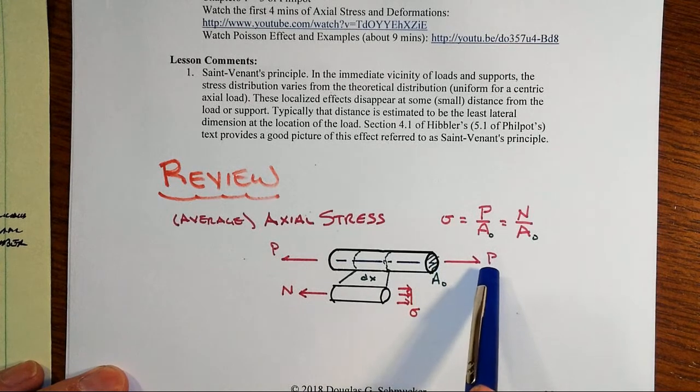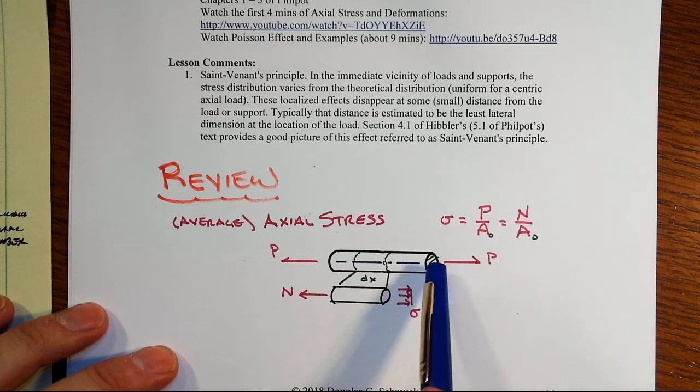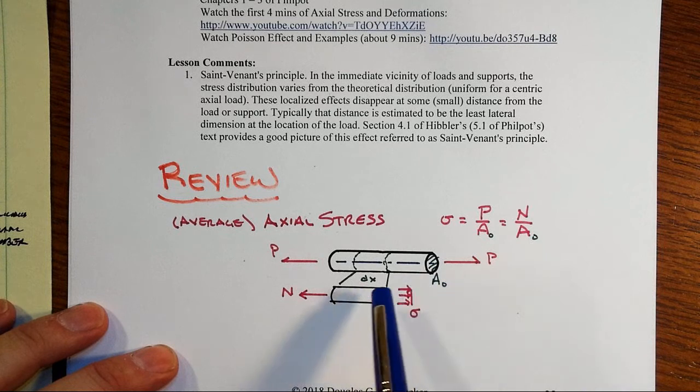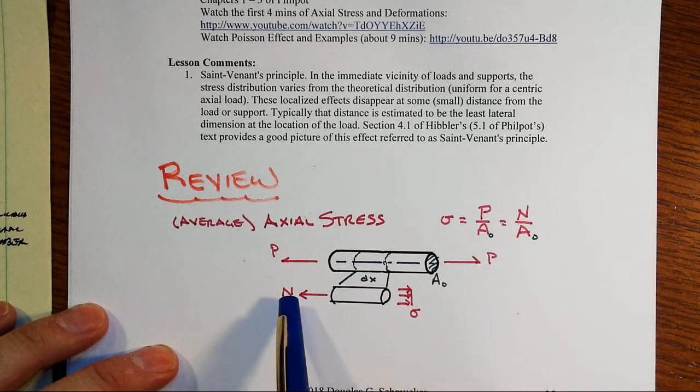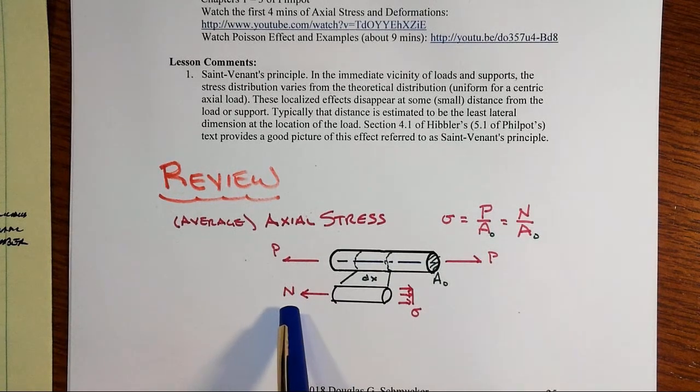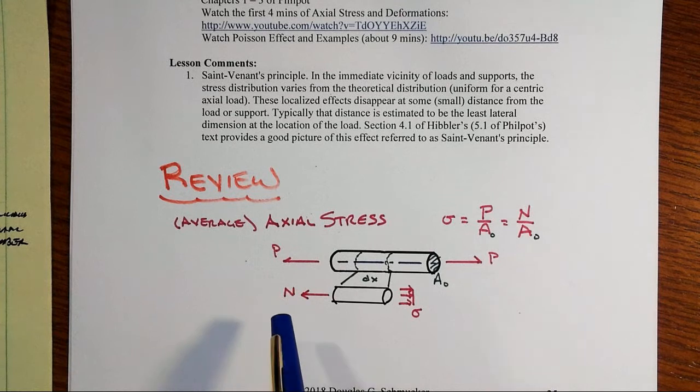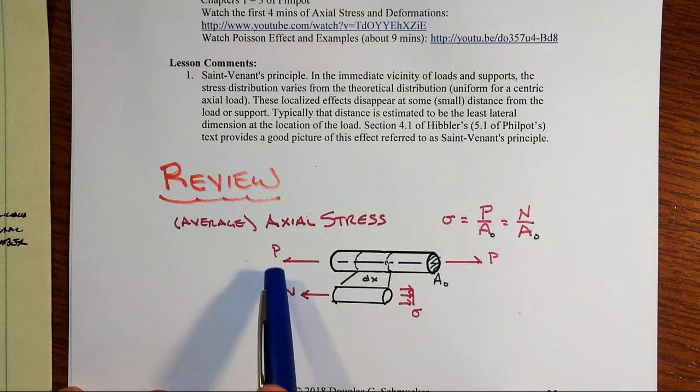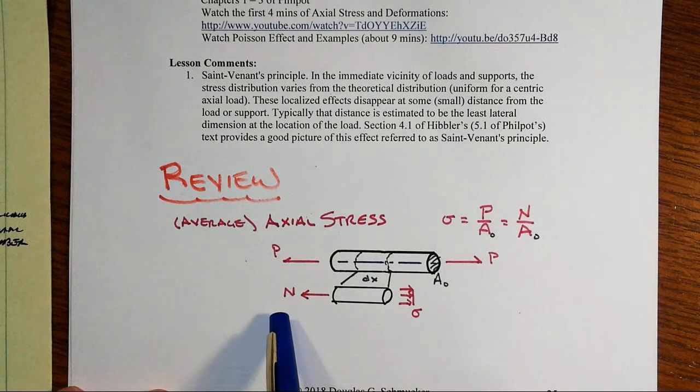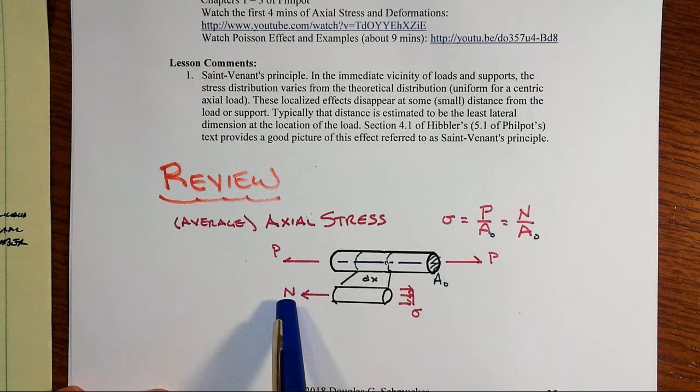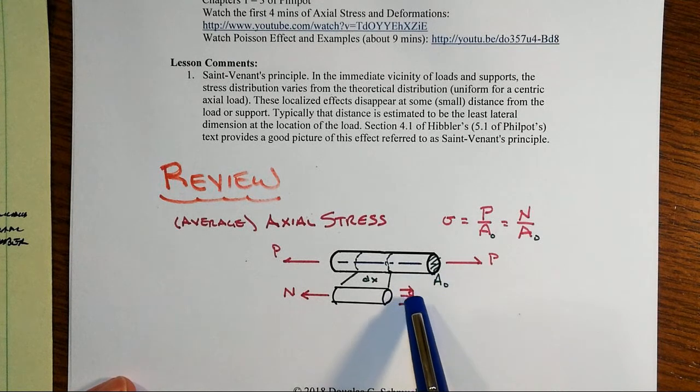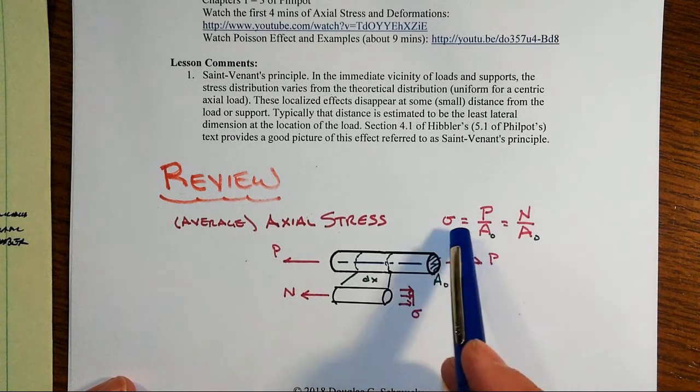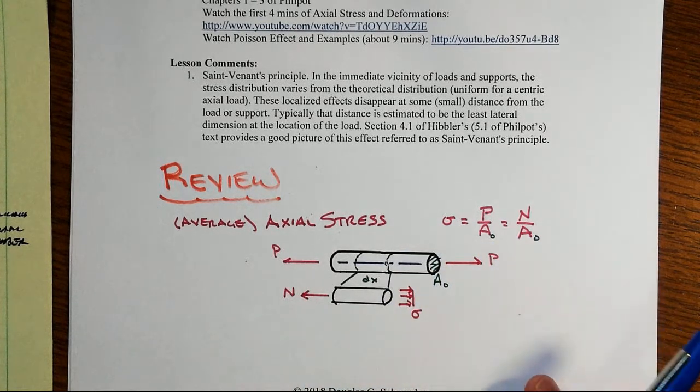Externally we might sometimes call that force P. Sometimes when we get into the little tiny differential piece of this, the little dx, people like to call the axial force capital N. Some people don't because they think that looks like N for Newtons, so it's very much a preferential thing here. These two are the two most common symbols. Both of them mean the internal axial force in the member. And we assume that the stress is spread out nice and uniform, so sigma equals P over A or N over A.